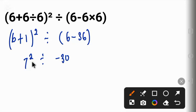7 raised to power 2... 7 raised to power 2 is the same as 7 times 7, which is 49. So we have 49 divided by minus 30, put it in the bracket.